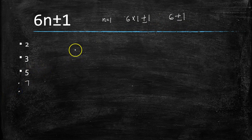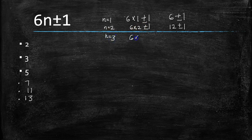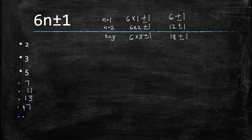For n = 2: 6 × 2 = 12, so 12 + 1 = 13 and 12 − 1 = 11 — both are primes. For n = 3: 6 × 3 = 18, so 18 − 1 = 17 and 18 + 1 = 19 — both are primes.